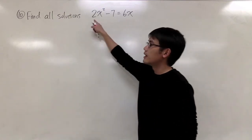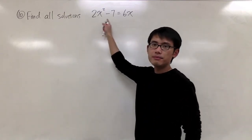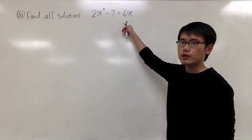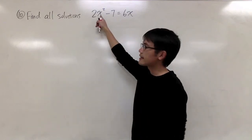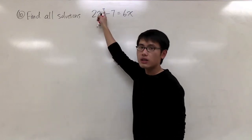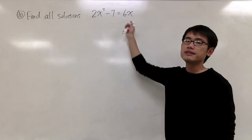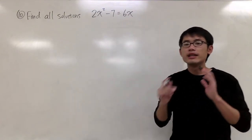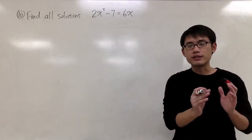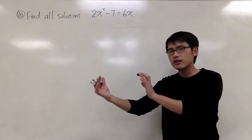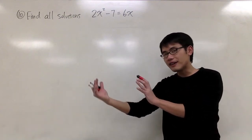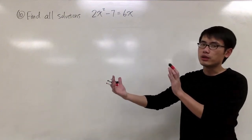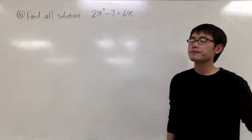We have this equation: 2x squared minus 7 is equal to 6x. This is a quadratic equation because we have x to the second power being the highest power of x. The way to deal with this is to make one side equal to 0 first and try to factor the other. If it's not factorable, we'll use the quadratic formula or completing the square.